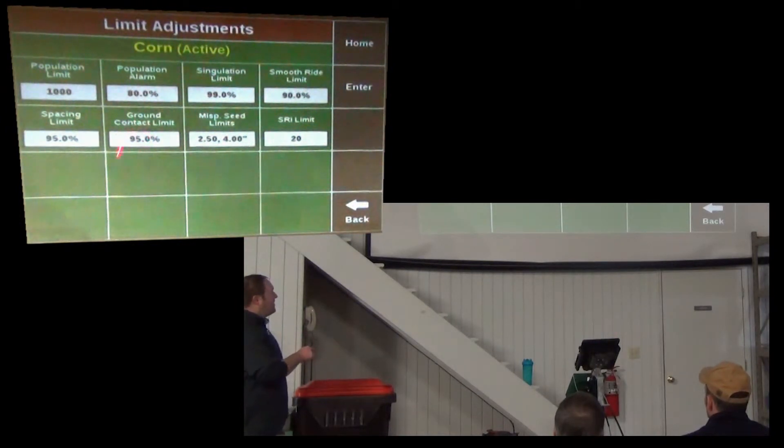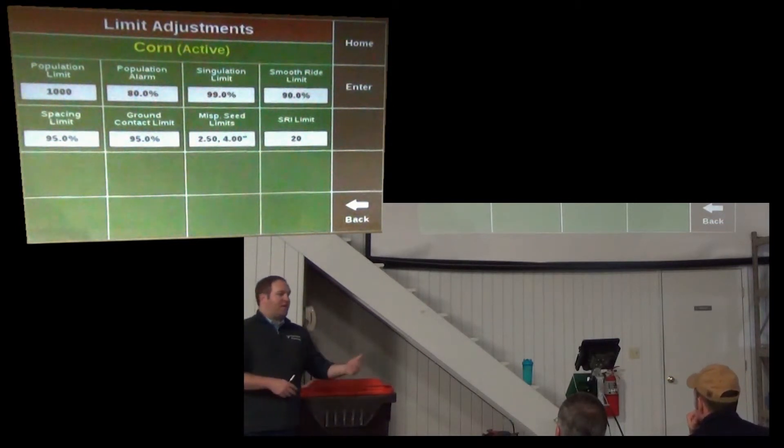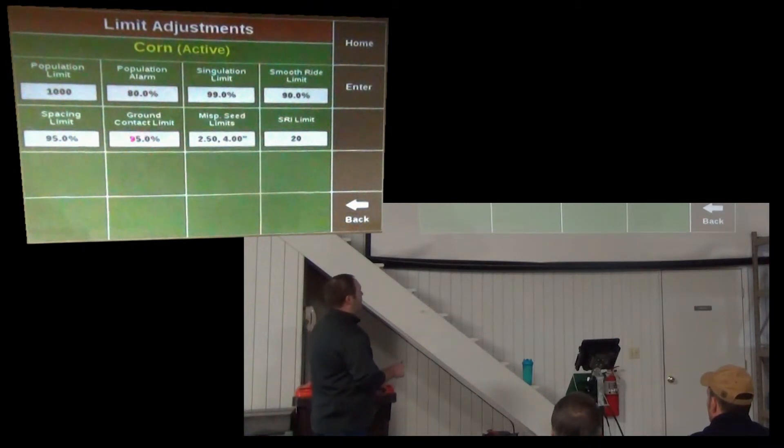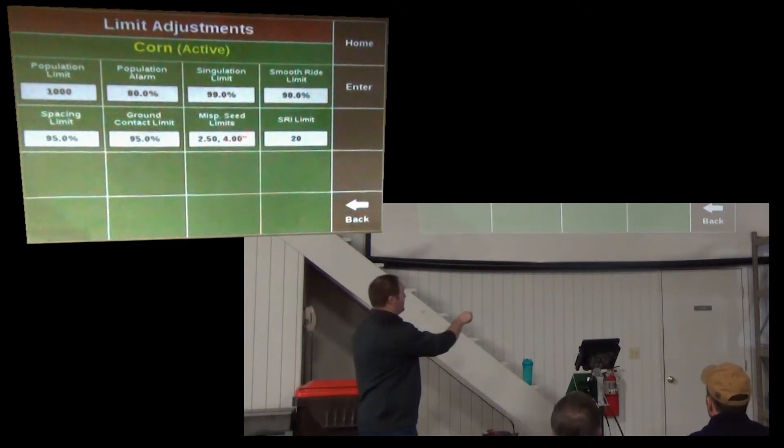Ground contact limit along with singulation is a very important one. Shallow plants, or shallow planted seeds planted in drier soil, have a real great opportunity to emerge late, which is a negative thing, and not out yield. So 95 is a good spot. SRI limit, 20 is a good spot for that. Your displaced seed limits is 4 inch. That's what determines when the good spacing box determines it's an error.